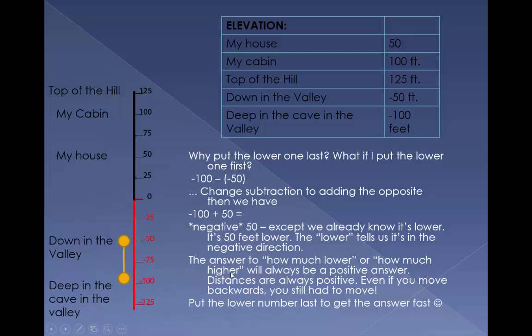Why put the lower one last? What if I put the lower one first? We'd have negative 100 minus negative 50. If we change subtraction to adding the opposite, we'd have negative 100 plus 50, which would be negative 50, except we already know it's lower. It's 50 feet lower. The lower tells us it's in the negative direction.